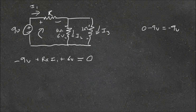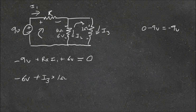Looking at the next loop, we'll define the current as going this way. For the 4-ohm resistor we're going from negative to positive, which is different to what we're doing here. So we have minus 6 volts from the voltage drop across this resistor, plus I3 times its resistance of 1 ohm, equals zero. On the second equation we only have one unknown, so we can solve it: rearranging, we find I3 is equal to 6 amps.